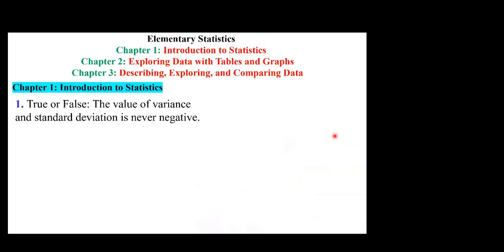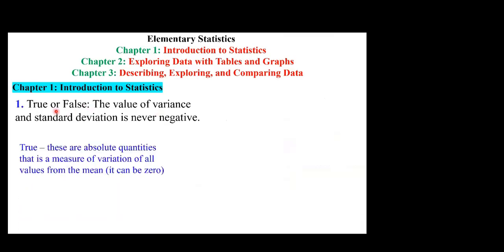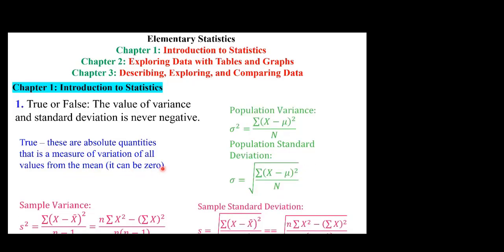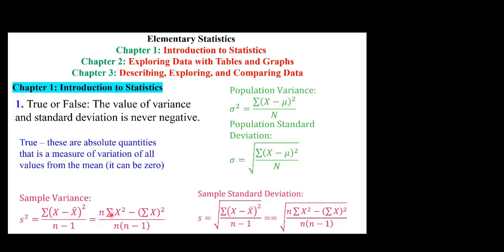The value of variance and standard deviation is never negative — is this true or false? This is a true statement, because variance and standard deviation are absolute quantities that measure variation of all values from the mean. They can also be zero. Whether we look at sample variance, sample standard deviation, population variance, or population standard deviation, the numerator is a sum of numbers raised to the power of two and the denominator is a whole number, making it positive or zero. When you take the root of that, it is also positive or zero.